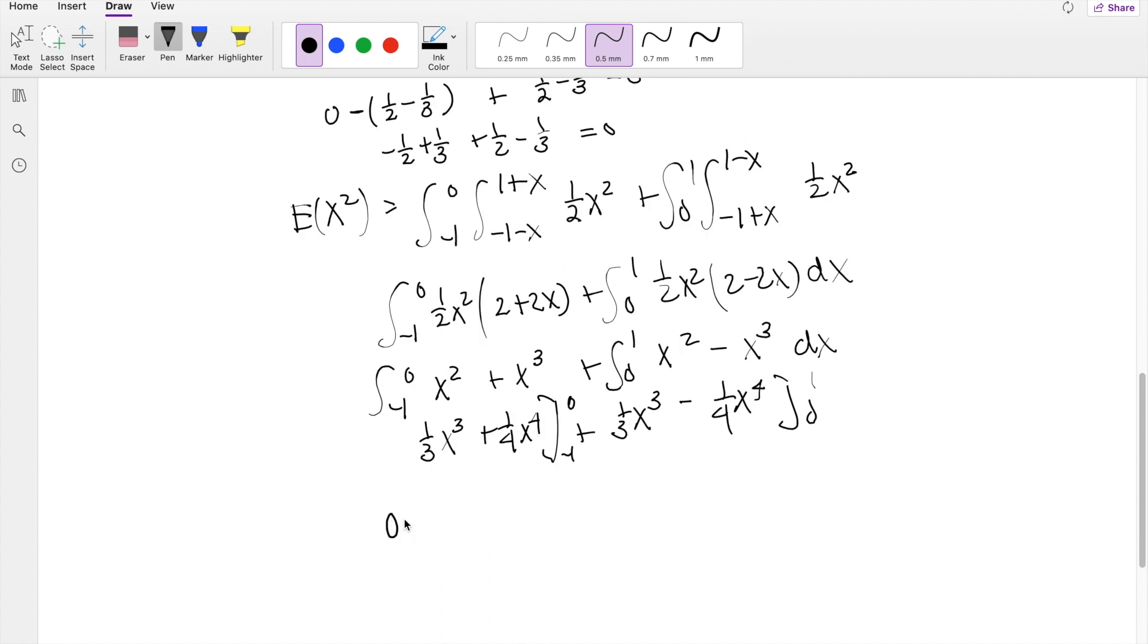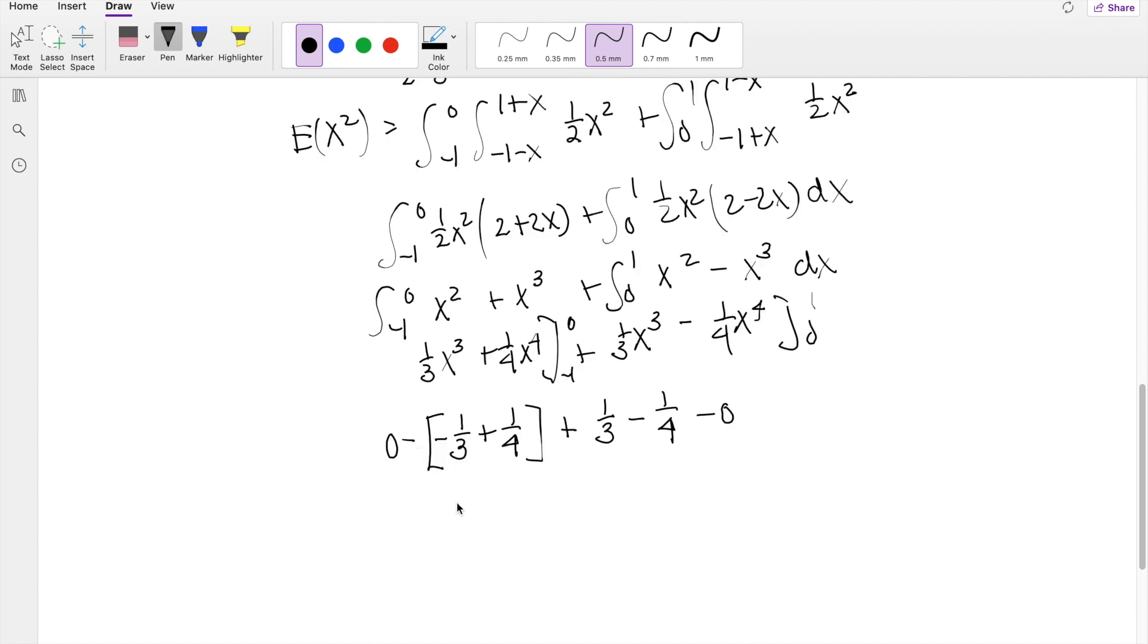Again, upper limit here is going to give you 0 minus this is going to be a negative 1 third here, negative 1 third plus a positive 1 fourth, plus on this side you get upper limit here is going to be 1 third minus 1 fourth, minus 0. So then the two negatives here make a positive, so you get 1 third minus 1 fourth plus 1 third minus 1 fourth. So you get, this is equal to 1 sixth.